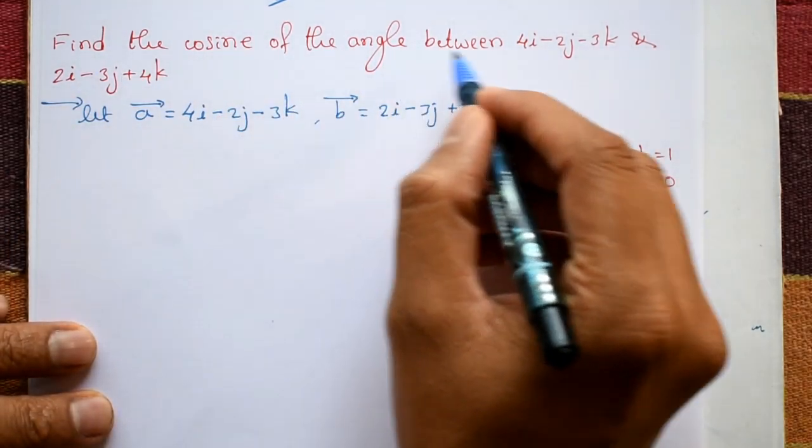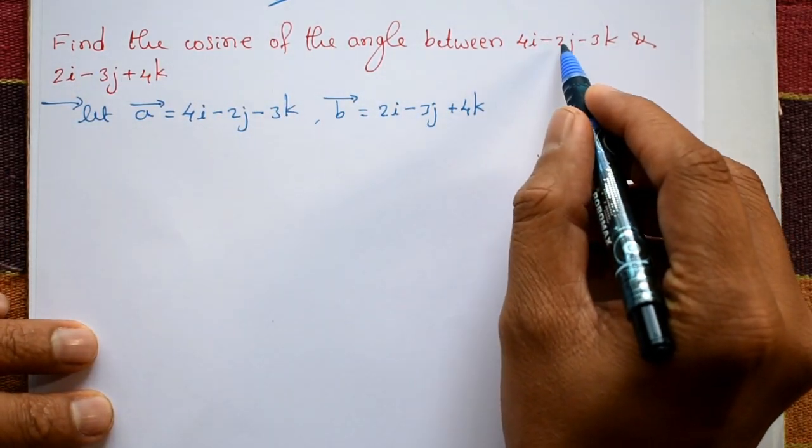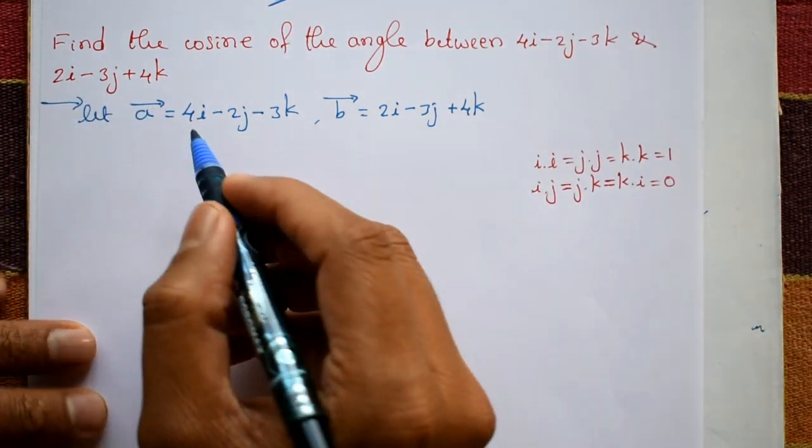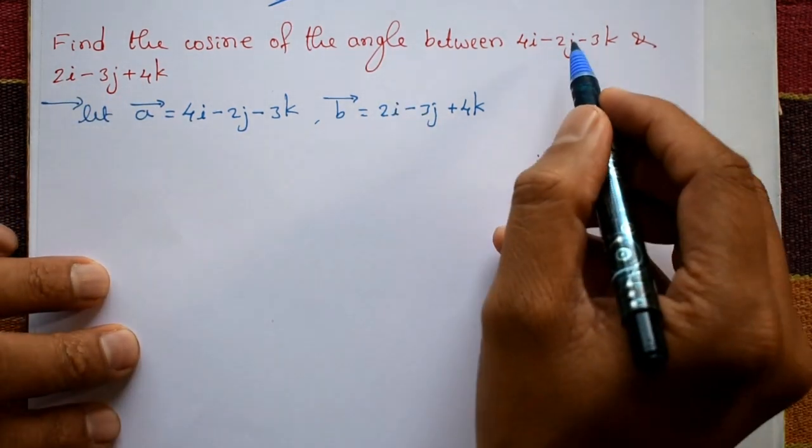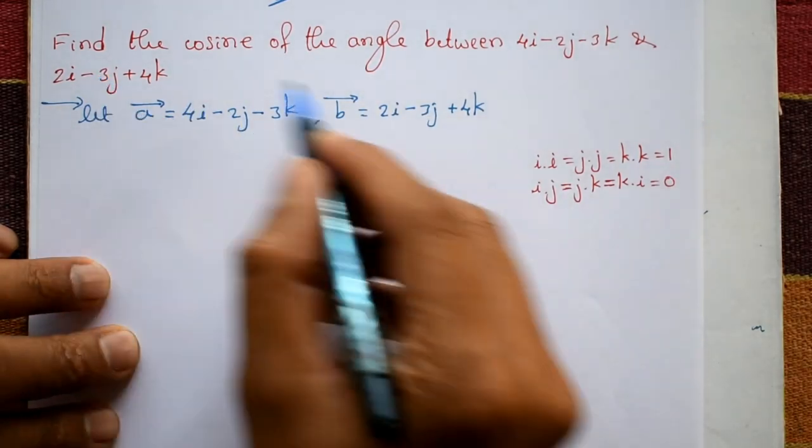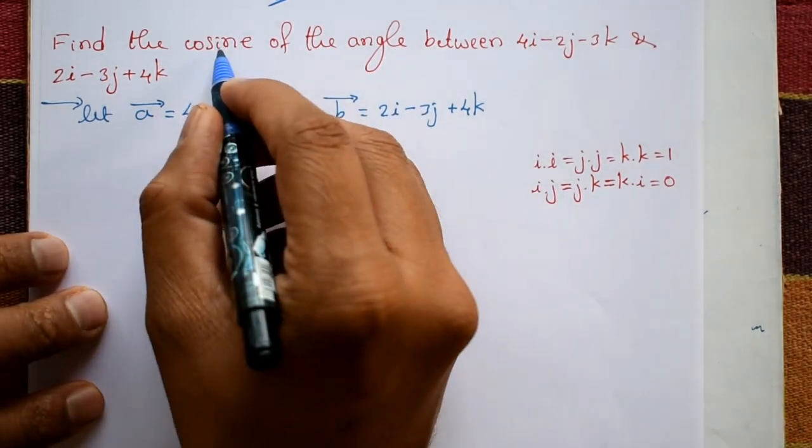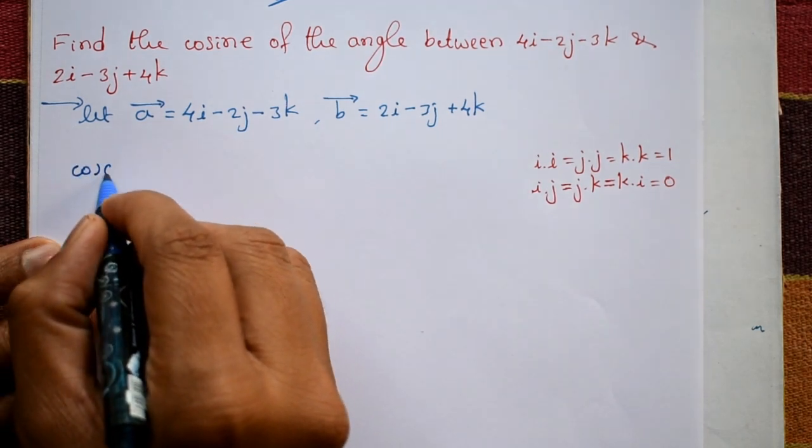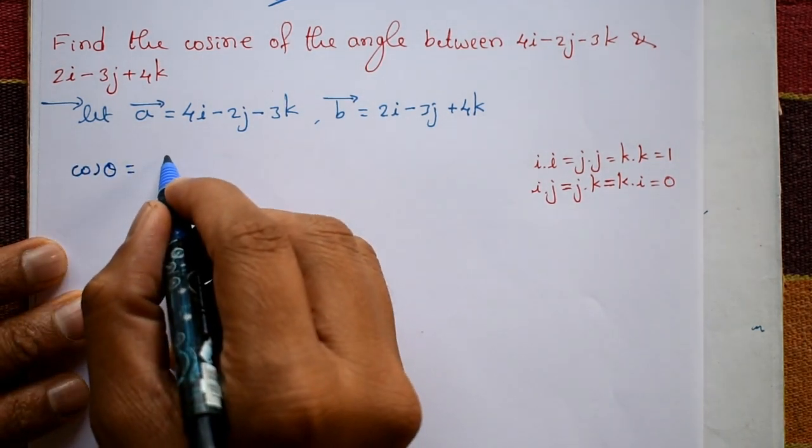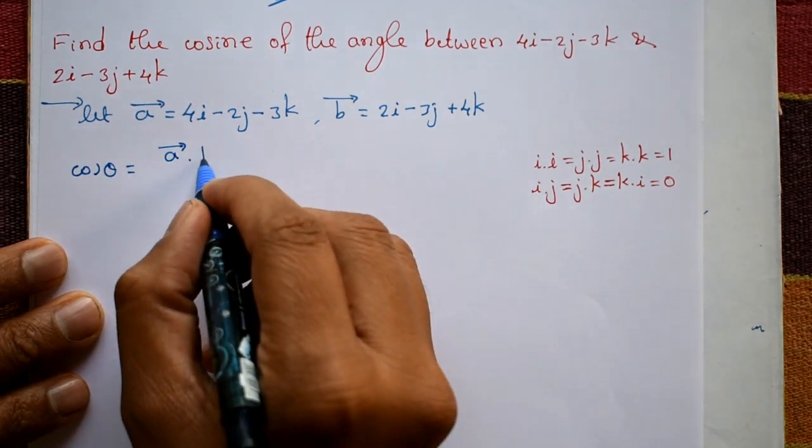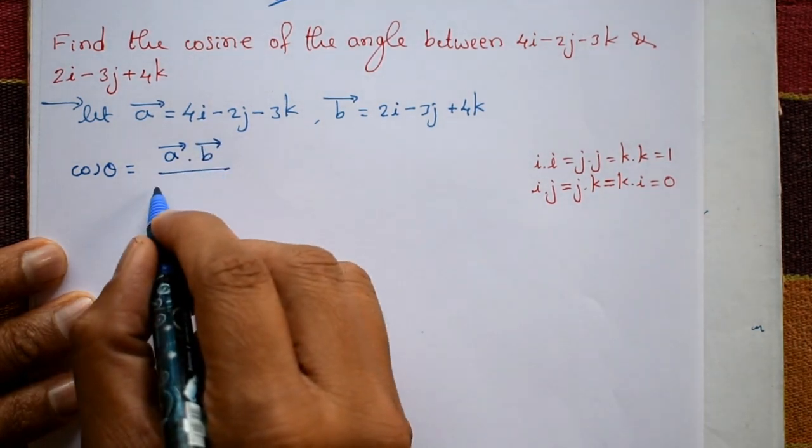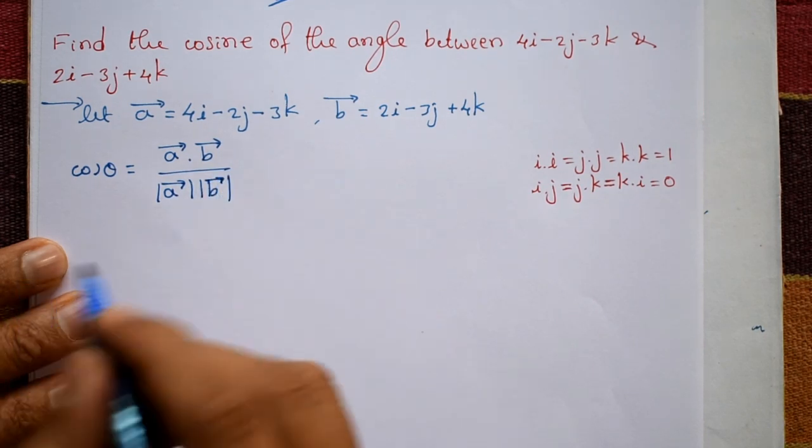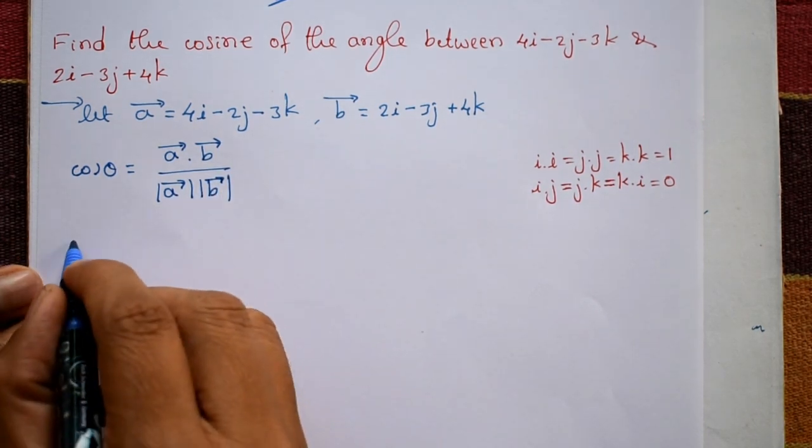Find the cosine of the angle between 4i minus 2j minus 3k and 2i minus 3j plus 4k. Now consider this is vector a and this is vector b. The cosine of angle formula is cos theta equals vector a dot b divided by magnitude of a into magnitude of vector b.